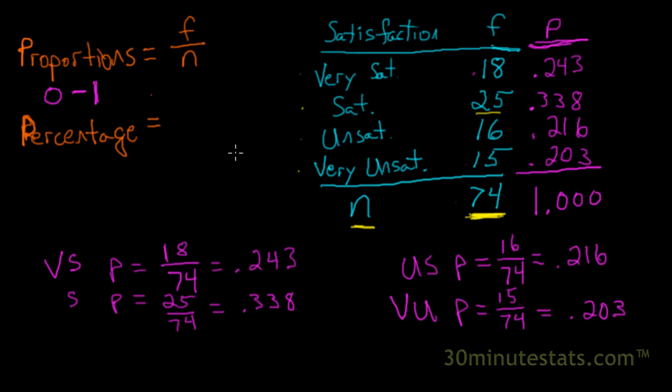And a percentage is really just a special kind of rate, where we start with a proportion. So we've got the frequency divided by the sample size, and then we just multiply it by 100. And by multiplying this proportion by 100, what we're doing is we're putting this onto a scale from 0 to 100.